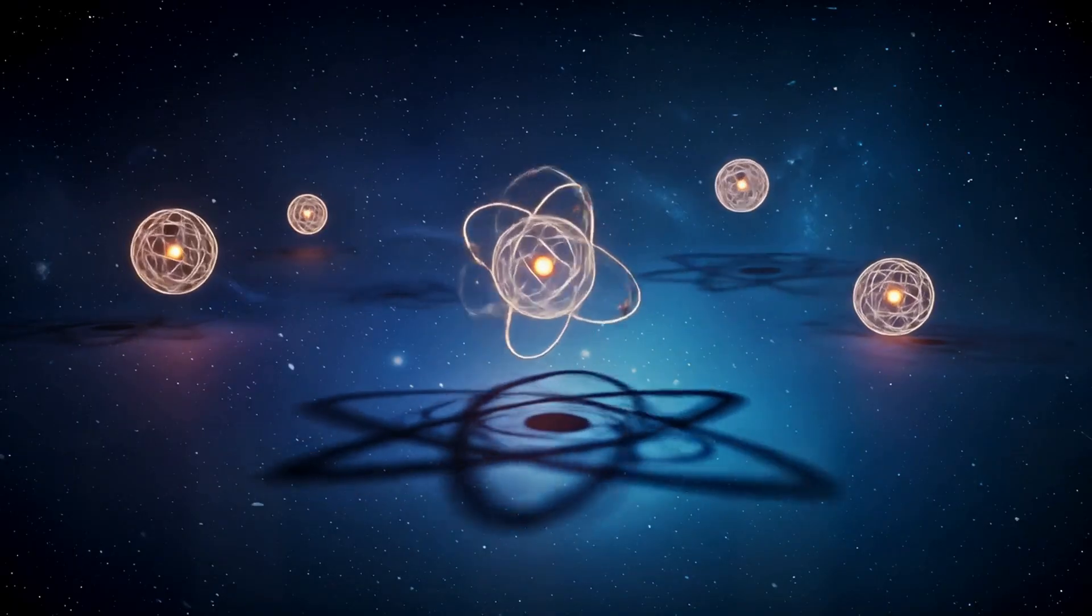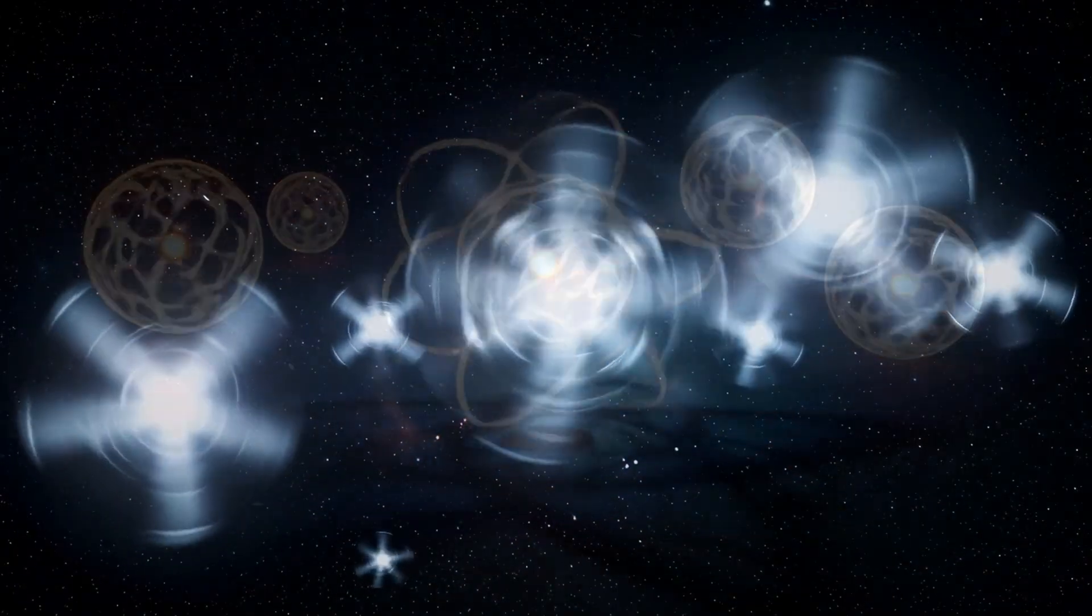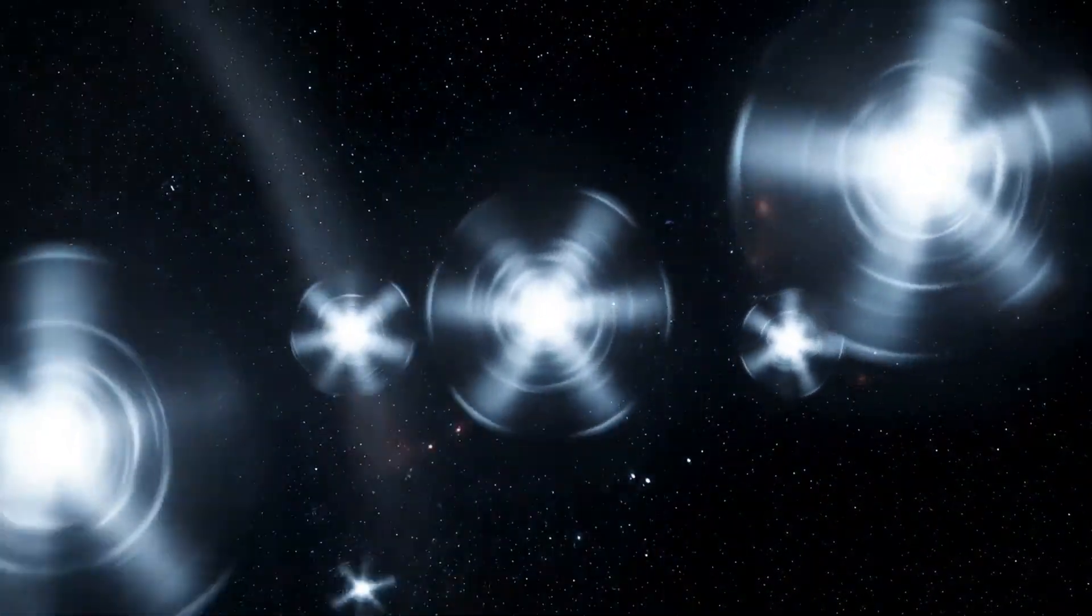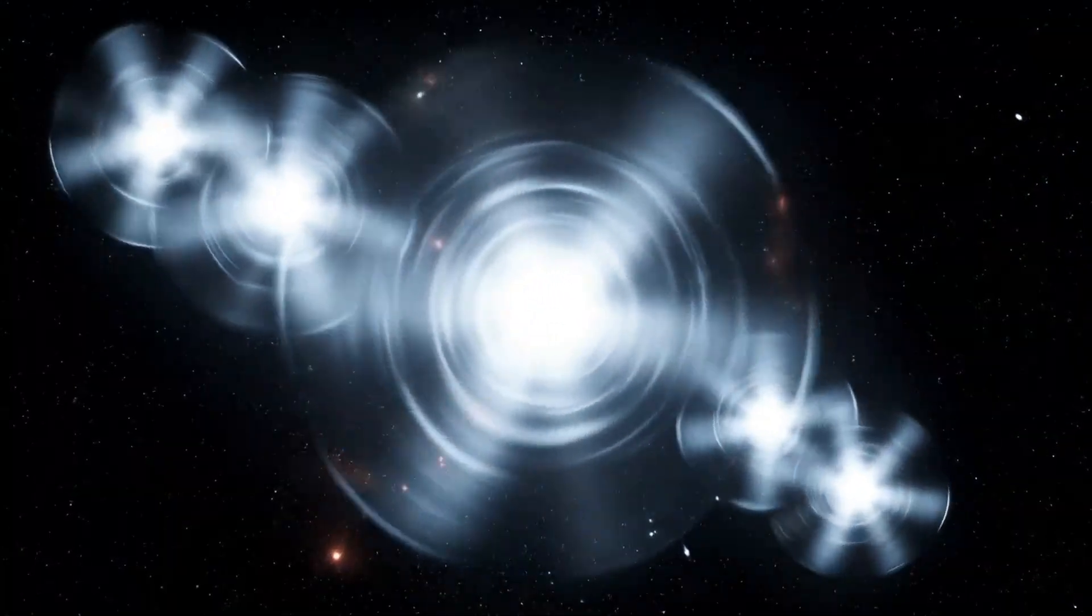But what we call an atom is actually a projection, like a holographic shadow of these spinning light clocks. When light clocks interfere with each other, they create interference patterns. Where they line up, we see peaks. Where they cancel, we see nothing.